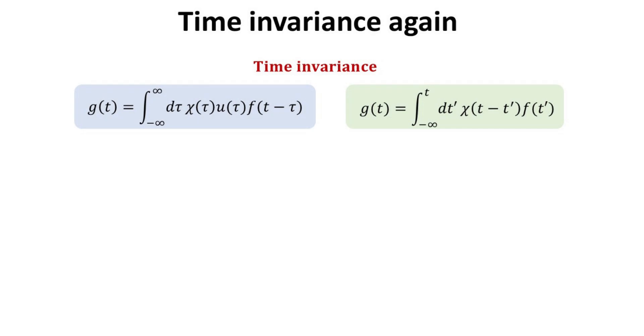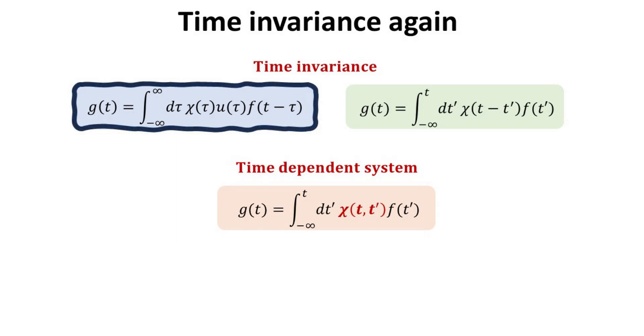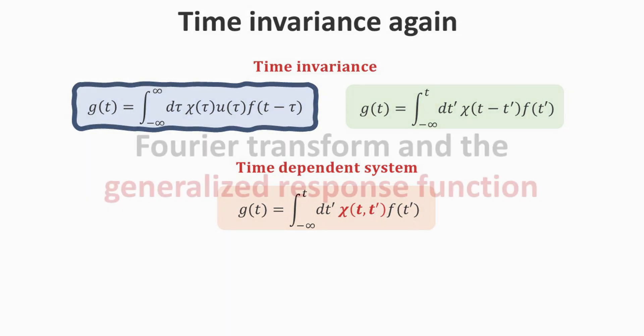This alternative form for our LTC system was obtained assuming time invariance. In the absence of time invariance, or in other words the system varies with time, then the response function can be described by the following general form. In this video, we are only interested in the time invariance case, and will use the following response model in what follows.